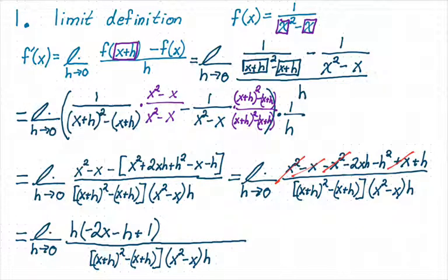So I get negative 2x minus h plus 1 over that denominator. But now the h's will cancel out. And now, finally, we can take the limit. Because now when I plug in 0 for h, I'm not dividing by 0. So I don't have to be Chuck Norris. I can just be Dr. Gibbons. And I'm really happy being who I am.